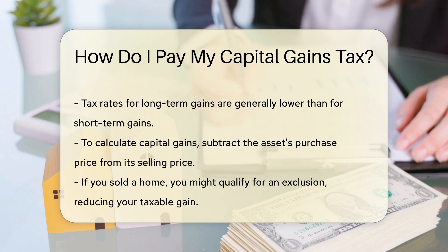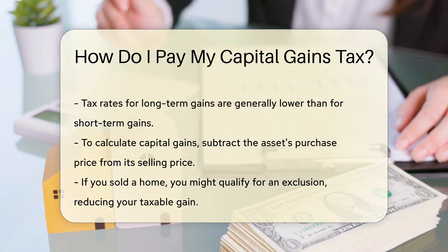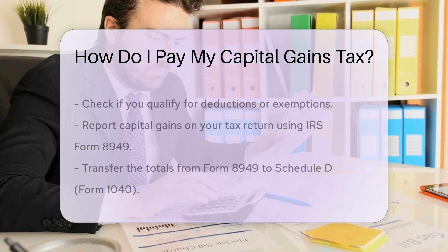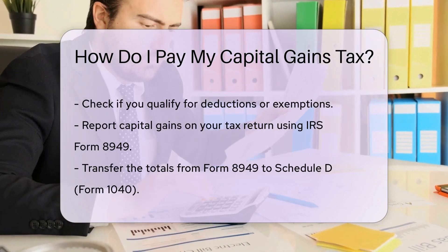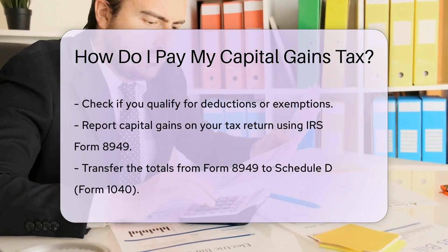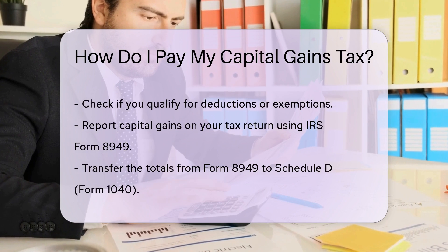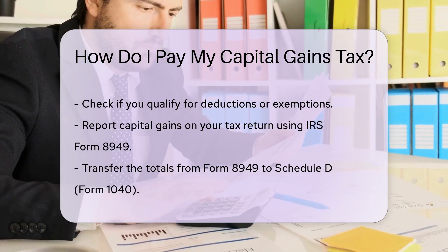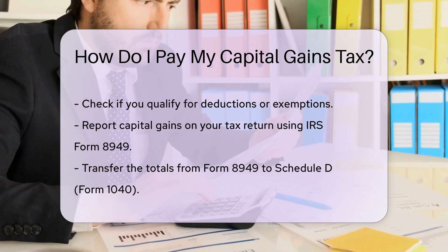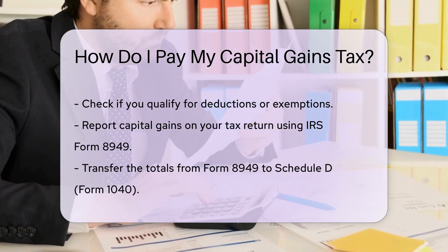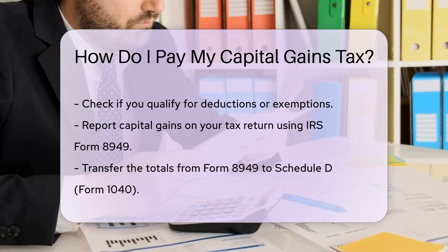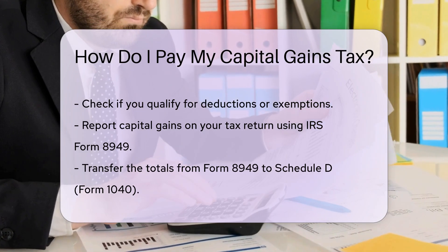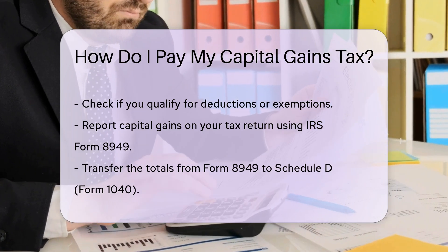You will need to report your capital gains on your tax return. Use IRS Form 8949 to report sales and exchanges of capital assets. Then transfer the totals to Schedule D, Form 1040. Ensure you keep records of your transactions, including purchase and sale dates and amounts.